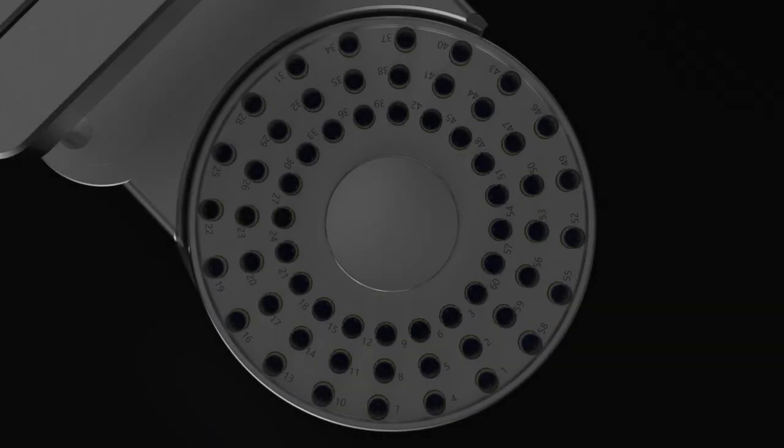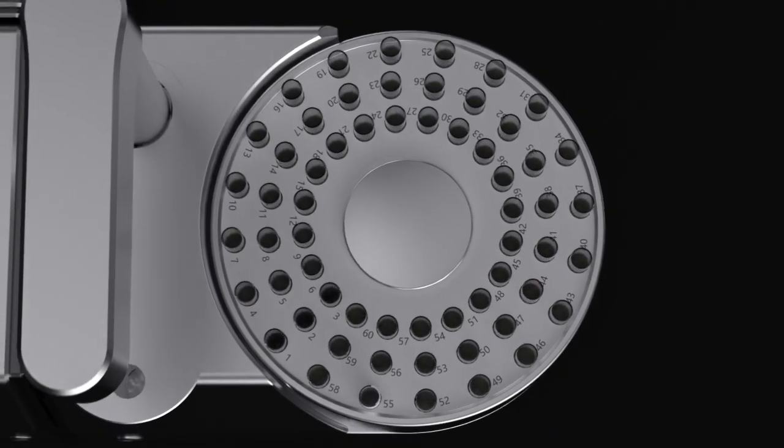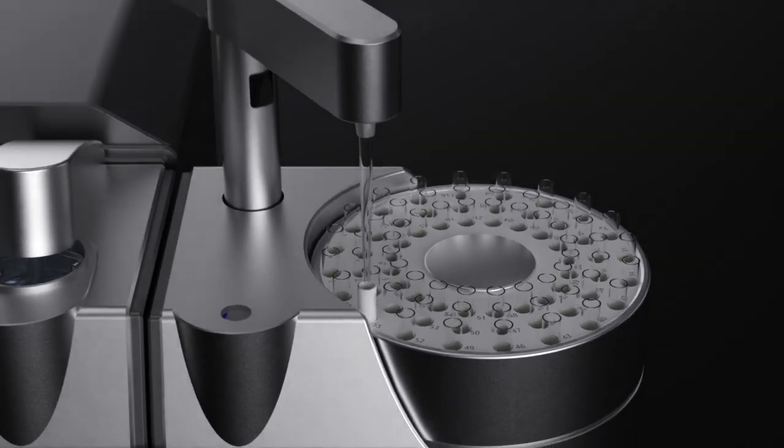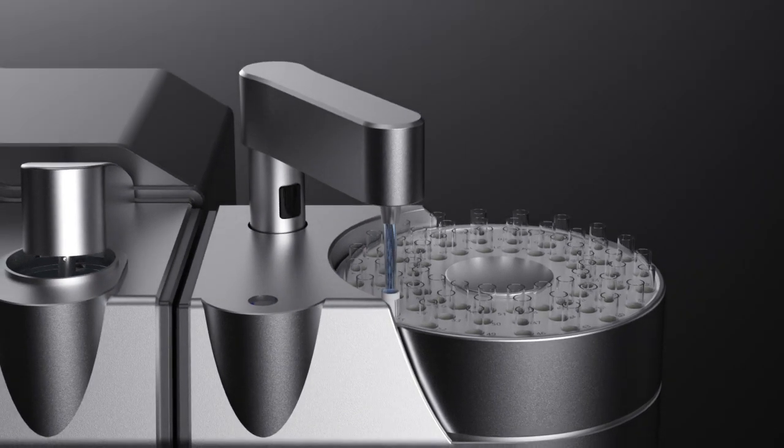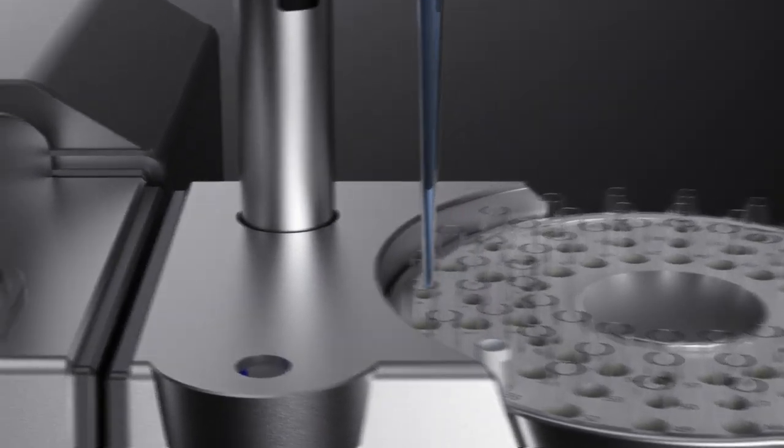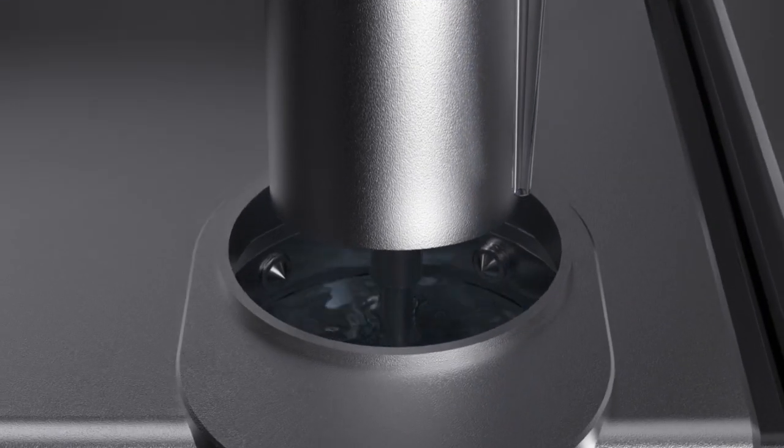This is BT-A60, a brand new auto-sampler that pre-disperses up to 60 samples automatically whether they are dry or wet. But I am getting too ahead of myself. Let me show you something truly amazing.